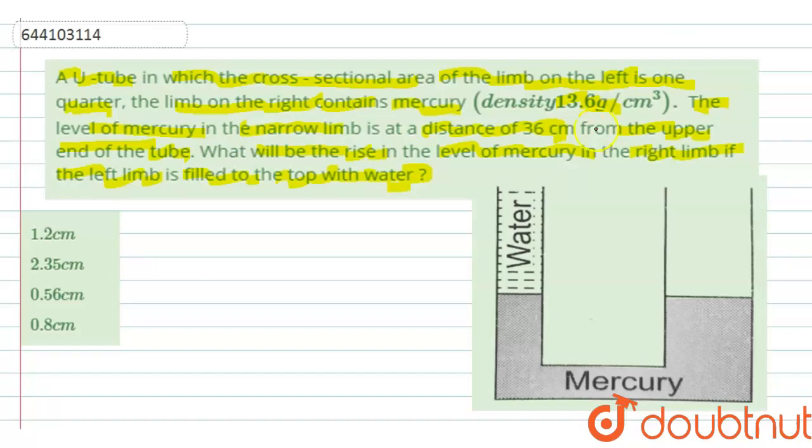So we are given a U-tube section in which two limbs are there. Let's say the first limb is of A1 area and another limb of A2 area, in which we are given A2 is 4 times A1.